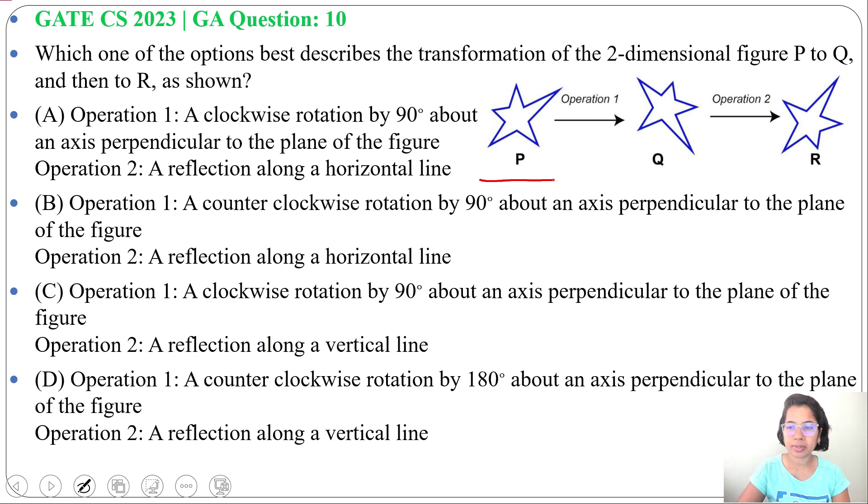So this is our initial two-dimensional figure. Let me assign some numbers like 1, 2, 3, 4, 5 for each corner.